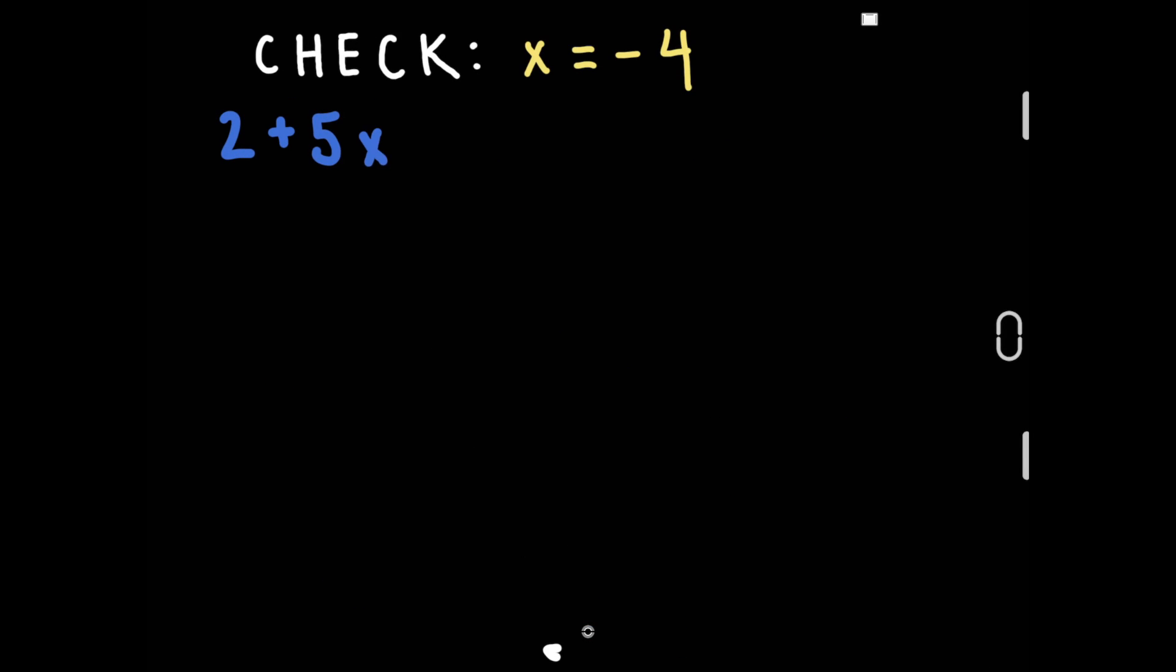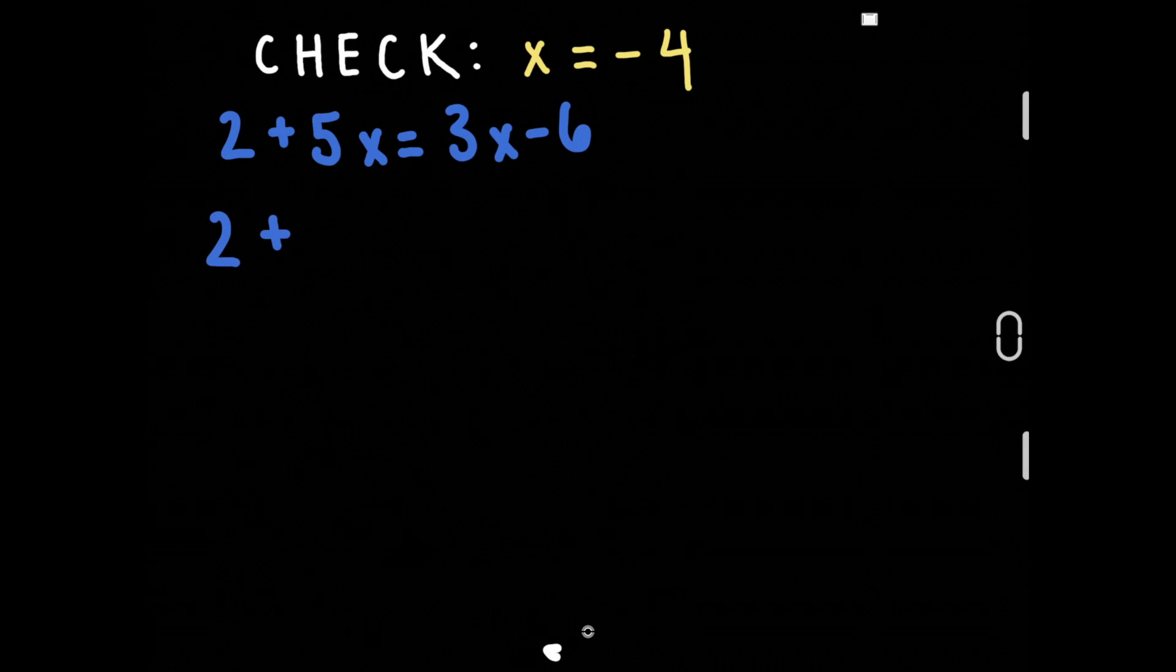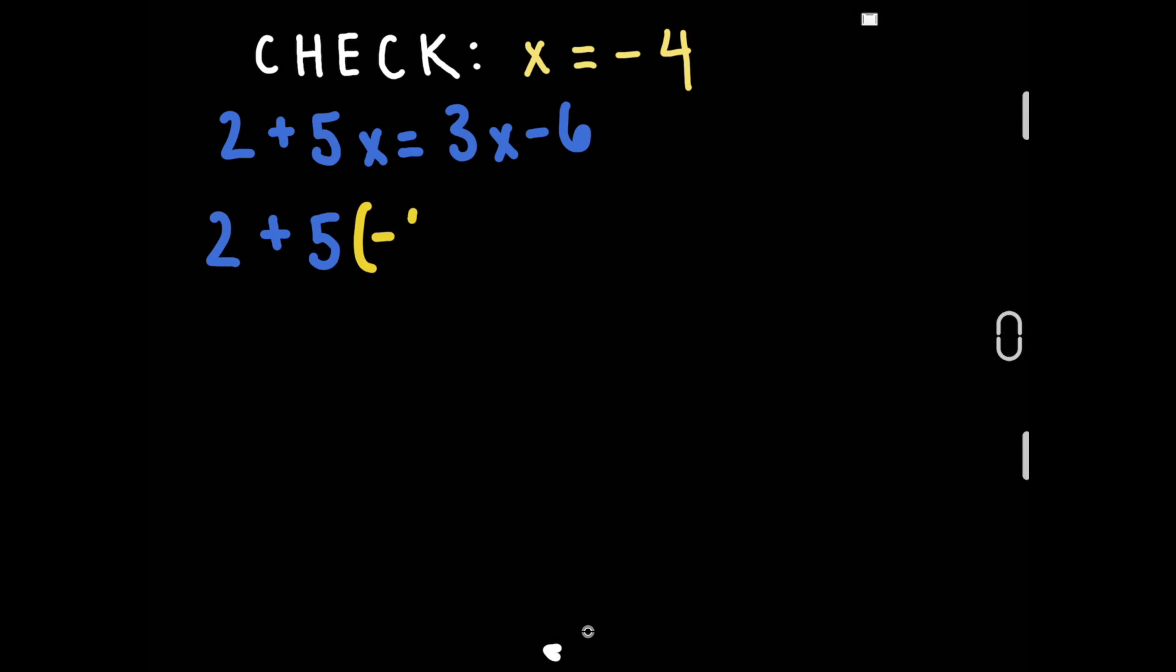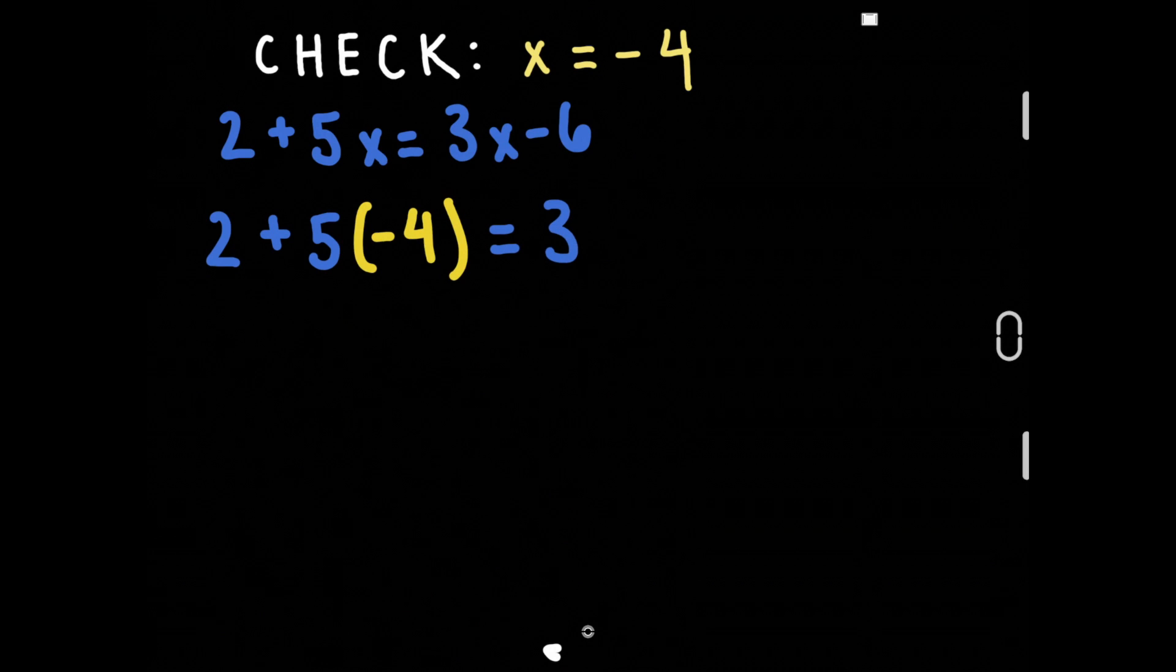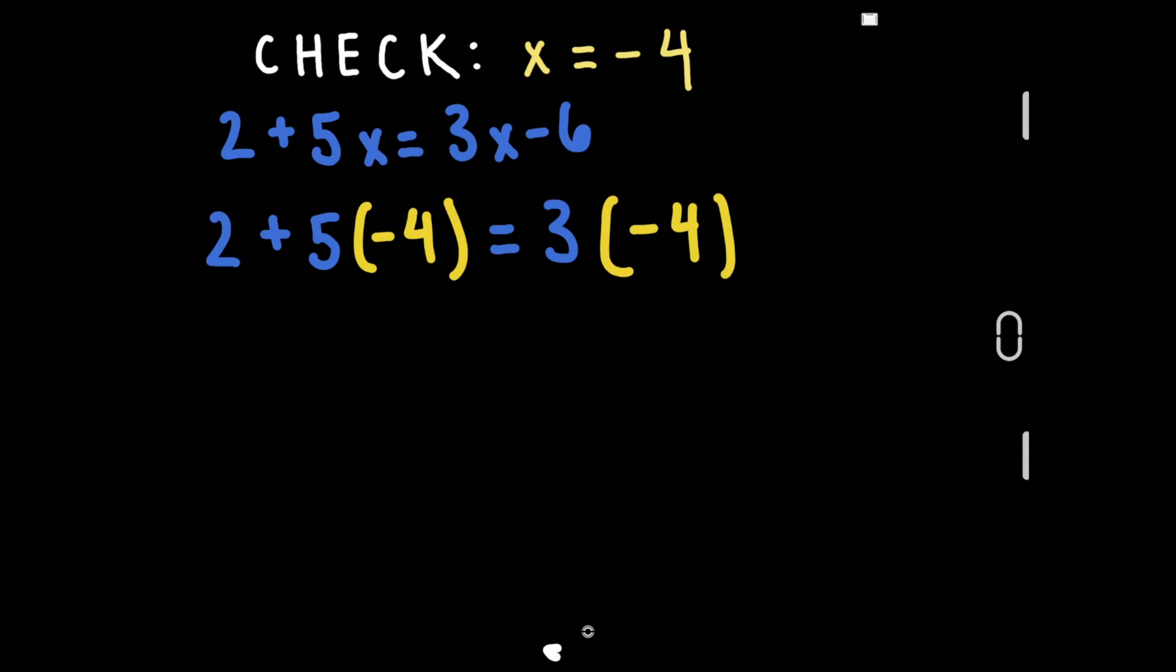Let's check this answer by plugging in x equals negative 4 into the original equation. 2 plus 5 times negative 4 equals 3 times negative 4 minus 6. 5 times negative 4 is negative 20 and 3 times negative 4 is negative 12.